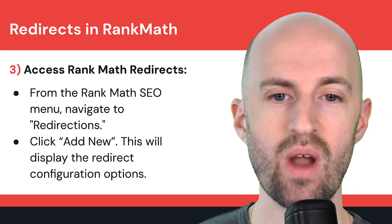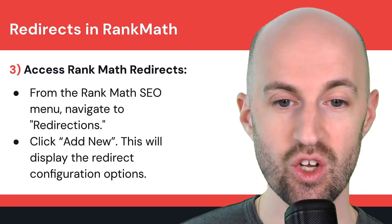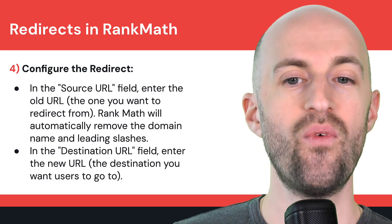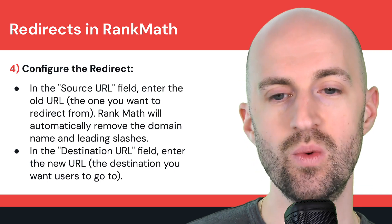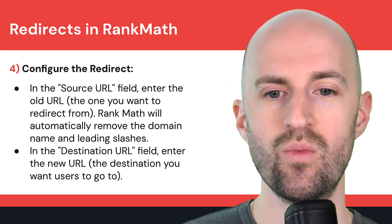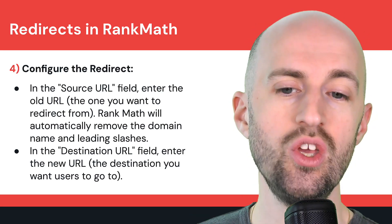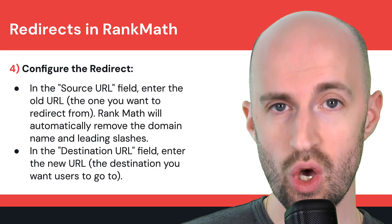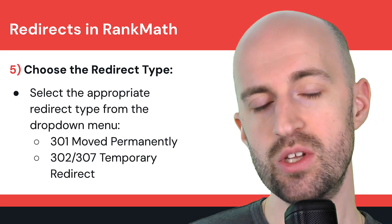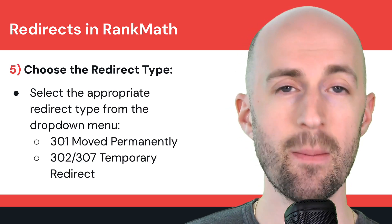Then you would access Rank Math redirects from the Rank Math SEO menu, navigate to Redirections, and click on Add New. This will display the redirect configuration options. Step four is to configure the redirect: in the source URL field, enter the old URL or the one you want to redirect from — Rank Math will automatically remove the domain name and leading slashes. In the destination URL field, enter the new URL or destination you want users to go to. Step five is to choose the redirect type from the drop-down menu: either 301 (move permanently), 302, or 307 (temporary redirect).